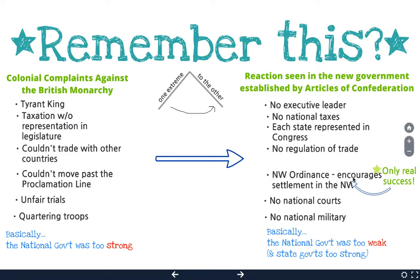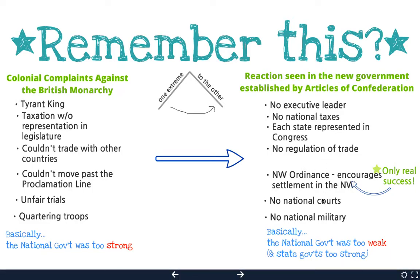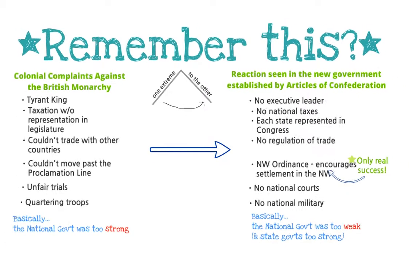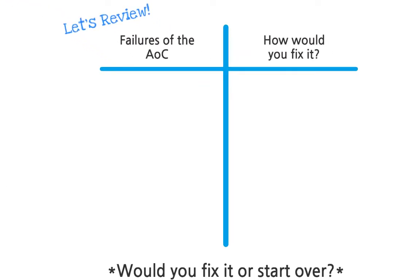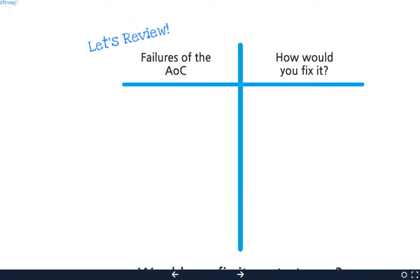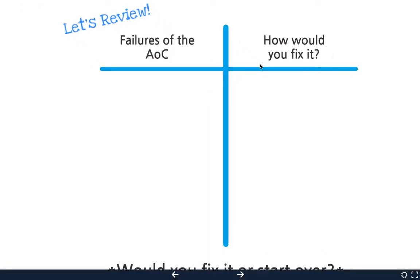The national government was too weak. They did have only one success, but things like — they could declare war but they didn't have a military, they didn't have any money. There were lots of issues, and then we had the event of Shays' Rebellion that showed it was too weak. So if you were to review and write out all the failures of the Articles of Confederation, which are over here, that would be an easy recap.